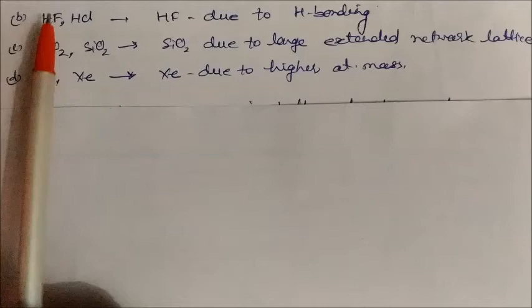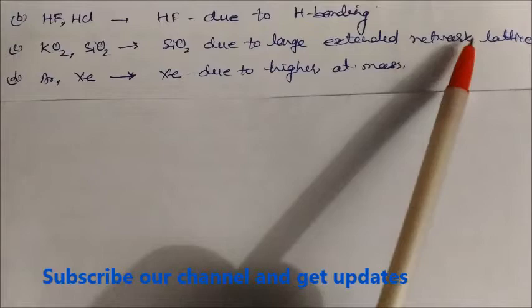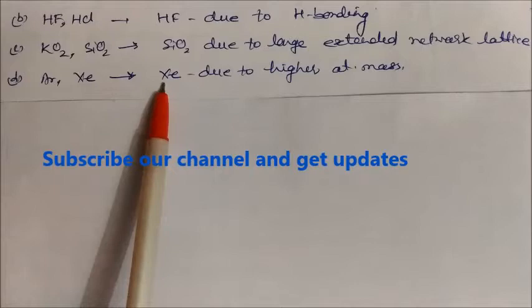In the case of HF and HCl, HF has the higher melting point because it has hydrogen bonding. For CO2 and SiO2, SiO2 has the higher melting point because it has an extended network lattice — that's why silicon dioxide has a higher melting point. Similarly, between argon and xenon, xenon has the higher melting point because it has a higher atomic mass.